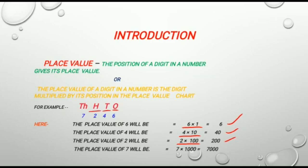And the place value of 7 will be 7 multiplied by 1000 is equal to 7000. Because in this number 7 is at 1000's place.